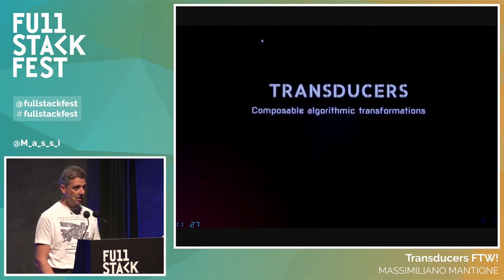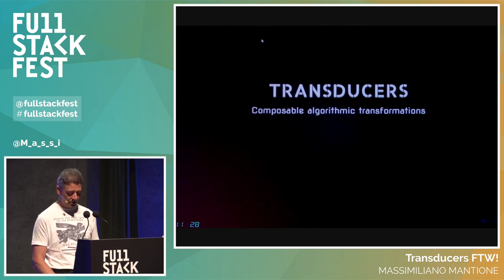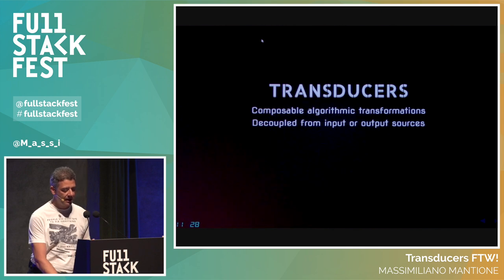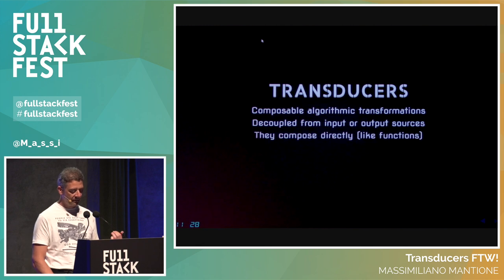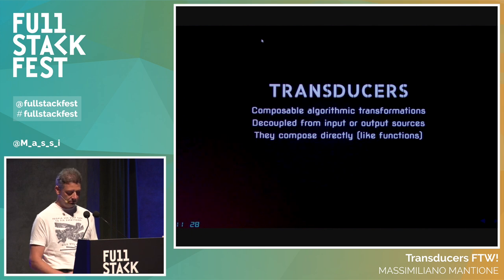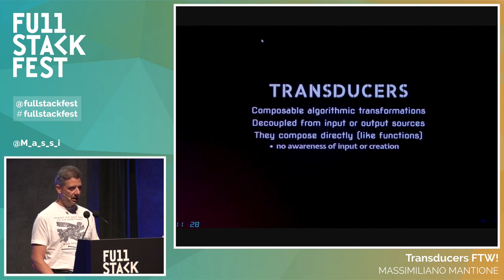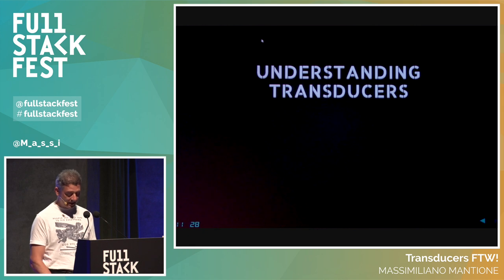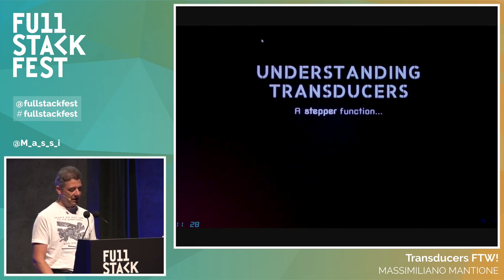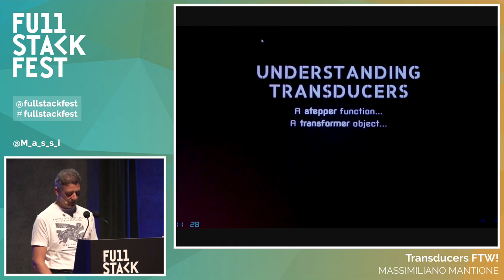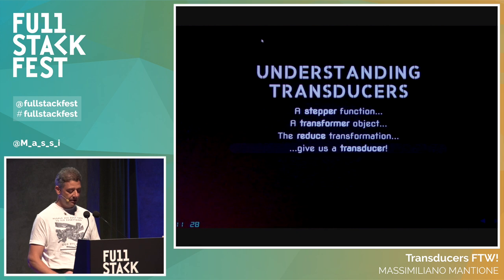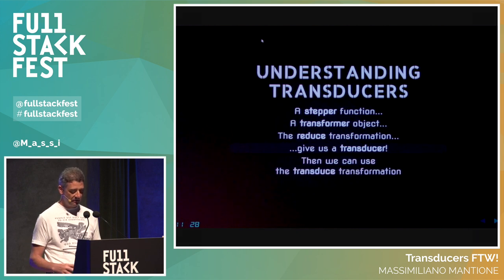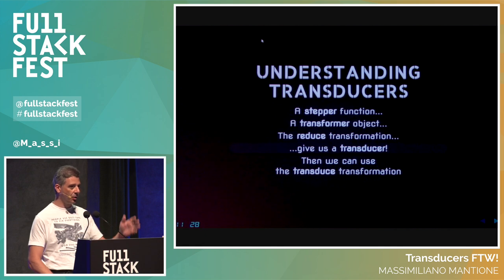Transducers are composable algorithmic transformations — something that takes values and gives you other values. They have nice properties: they are decoupled from input and output, so they are purely functional. They compose directly like Lego building blocks — you can snap them together and they don't disturb each other. They don't care about their input or creation, and they don't create intermediate aggregates. To understand them, you need: a stepper function, a transformer object, the reduce transformation, and then transducers and the transduce transformation.